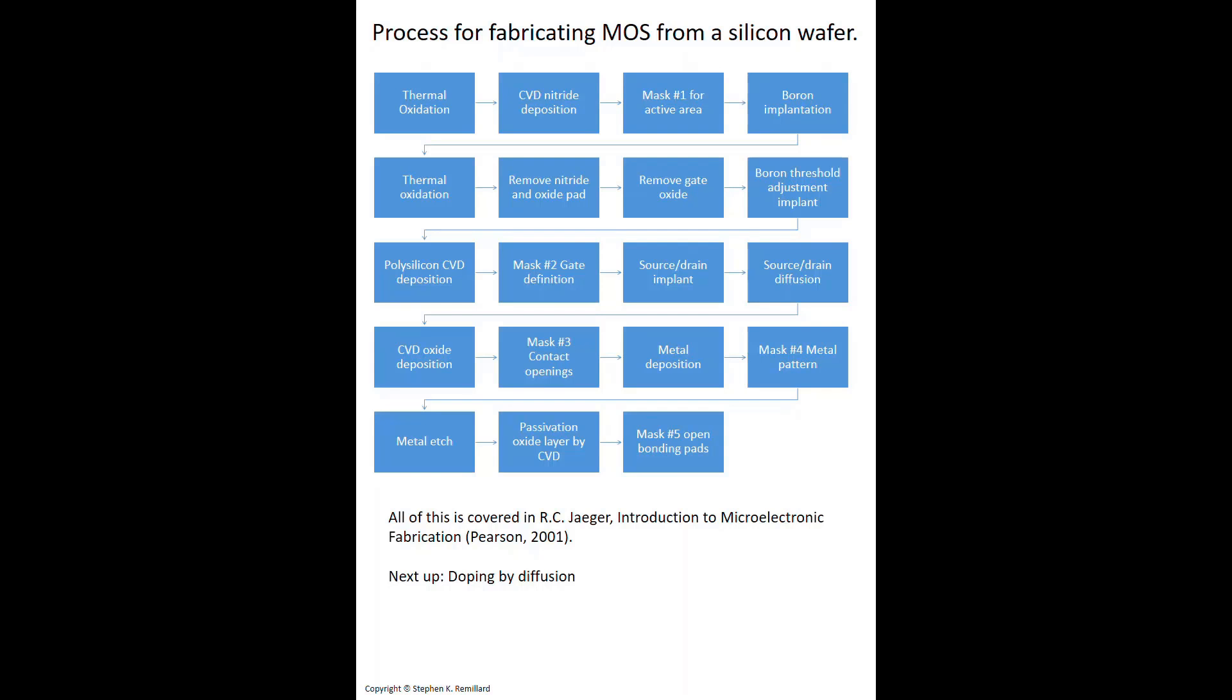We're going to talk about how the dopants are put in there, because I think that's particularly of interest to us. There's the ion implantation and the diffusion. As you can see from here, both can be used in tandem. They're not necessarily used one or the other, although that too is possible.